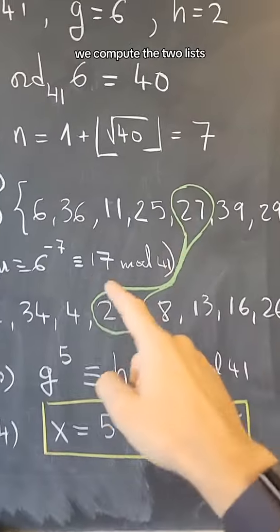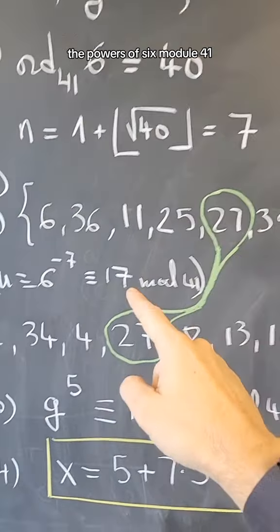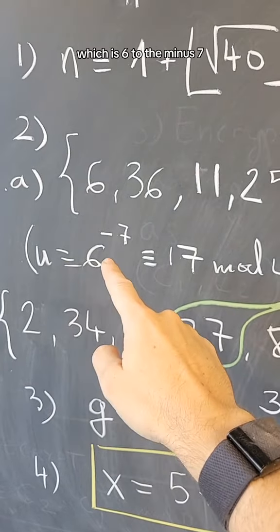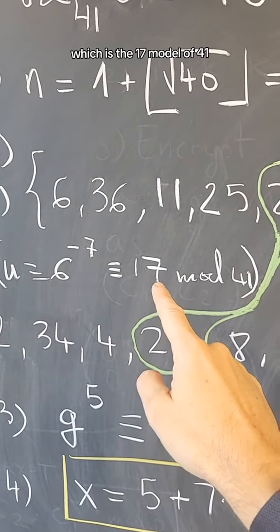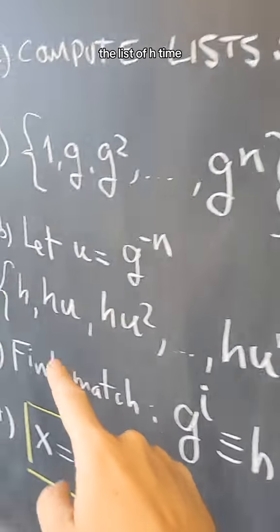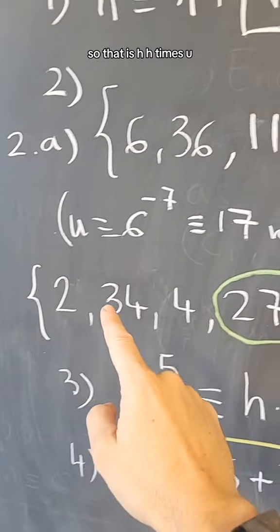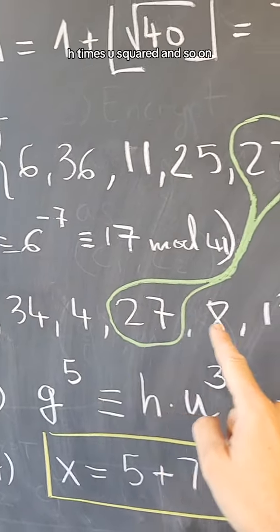We compute the two lists: the powers of 6 modulo 41, and compute u, which is 6 to the minus 7, which is 17 modulo 41. Then compute the list of h, h times u, h times u squared, and so on.